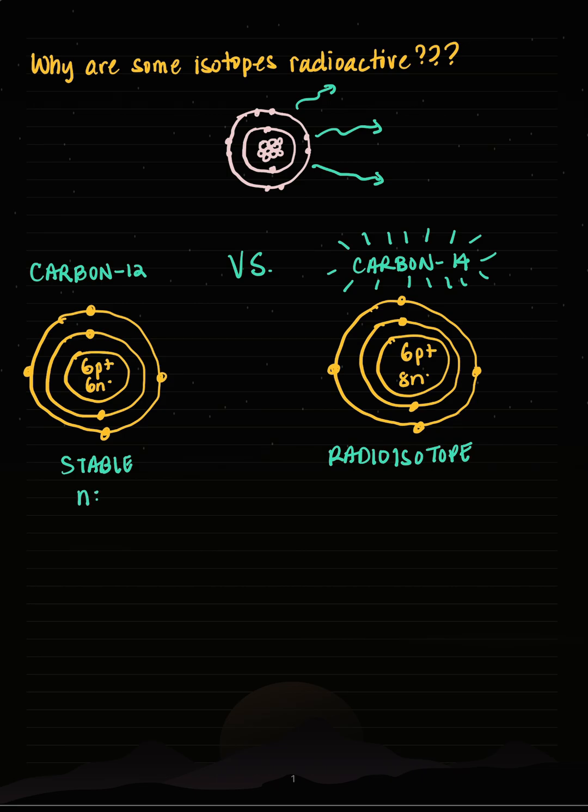So a stable nucleus for a small atom has a neutron-to-proton ratio of 1 to 1, and that's what I see for carbon 12. There are 6 neutrons and 6 protons.